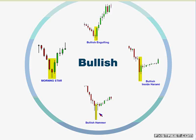The bias should always come from the higher timeframe. Somebody once explained it to me like a pack of cards — your aces are your weekly chart, king and queen is your daily, your jack and ten is the four-hour, and so on down. You want to be holding decent hole cards, getting a good bias from a larger timeframe.